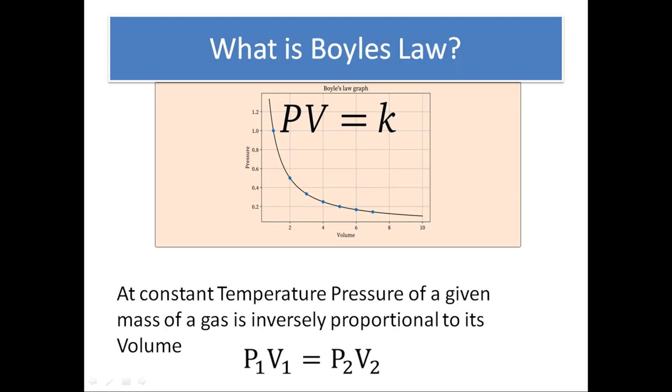The next question is also very famous and you should know the answer in this manner. At constant temperature, the pressure of a given mass of a gas is inversely proportional to its volume. And you have to say its formula: P1V1 equals P2V2.